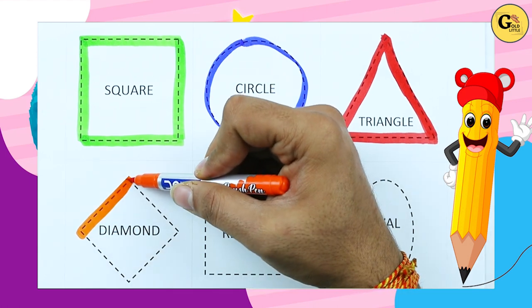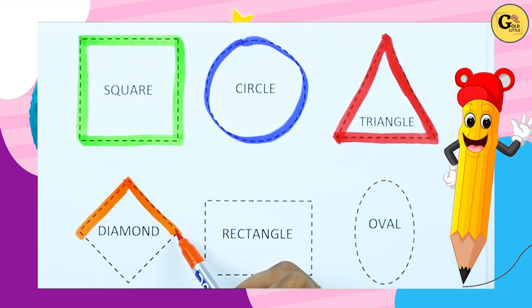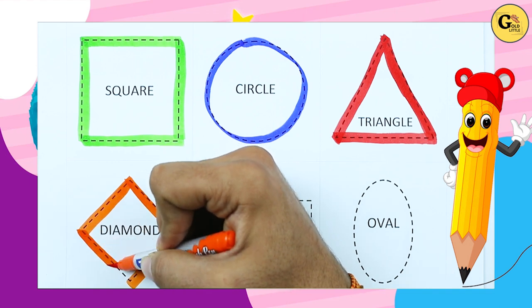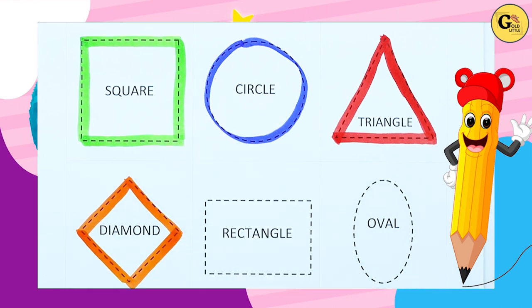One sliding line, two sliding lines, three sliding lines, four sliding lines. It's a diamond, orange color diamond.